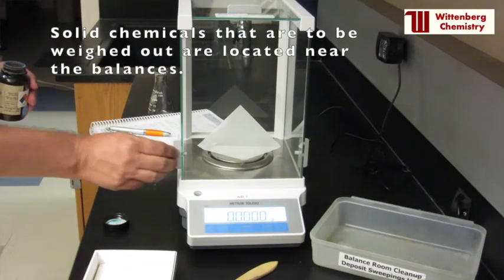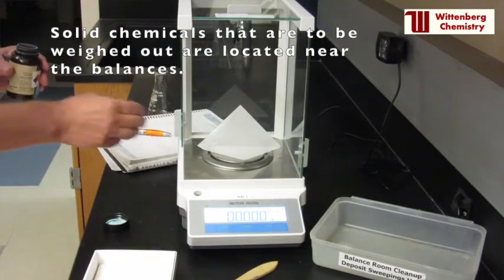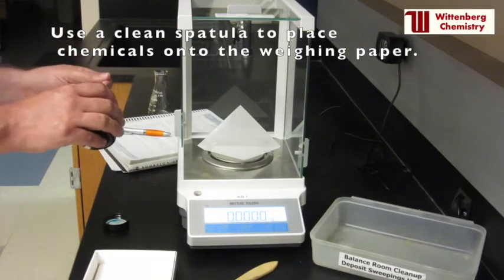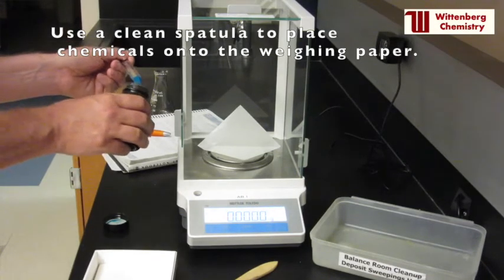Solid reagents are in labeled bottles and are located near the balances. Use a clean spatula to add the solid onto the weighing paper.